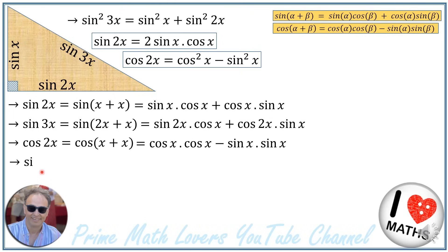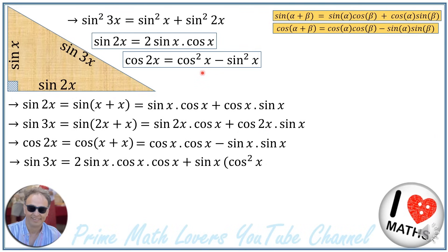So sine of 3x equals sine of 2x times cosine of x plus cosine of 2x times sine of x. I replace sine of 2x with 2 sine of x times cosine of x, and I replace cosine of 2x with cosine squared of x minus sine squared of x. This gives sine of x times (cosine squared of x minus sine squared of x) plus 2 sine of x times cosine squared of x.